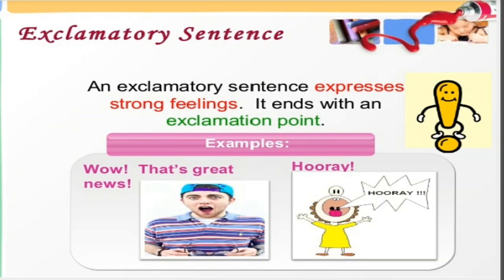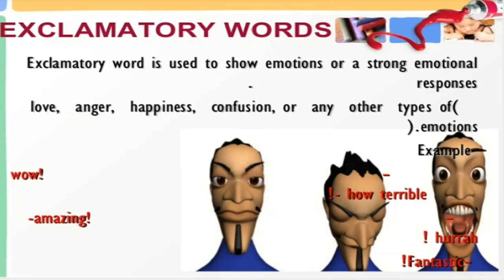The last type is the exclamatory sentence. An exclamatory sentence expresses strong feelings — feelings of happiness, grief, anxiety, sadness. Whenever a sentence expresses strong mental feelings, that is an exclamatory sentence, and it ends with an exclamation mark. Exclamatory words are used to show emotions or strong emotional responses. Emotions means your feelings, and after the feelings when you show some response, that is the emotional response.